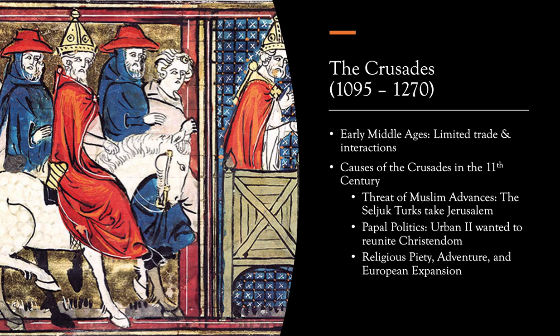Jerusalem had been held by the Byzantines for the past several centuries, but in the 11th century the Seljuk Turks were able to take control — and Jerusalem was a holy city to them as well, for different reasons. The Seljuk Turks also posed a considerable threat to the Byzantine Empire in general, which was really on the decline and needed support from Western Europe. And if the Byzantine Empire fell, then all of Christian European civilization would potentially be threatened by the Turks and the advance of these Islamic empires.